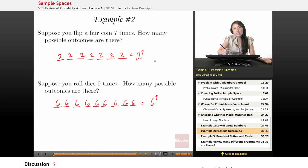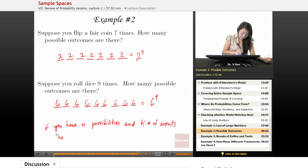And so the other way that you'll see the fundamental rule of counting is that it'll usually say if you have n events or n possibilities. So events are the little possibilities. So if you have n possibilities and k number of events, then total outcome is something like n to the k power, right?